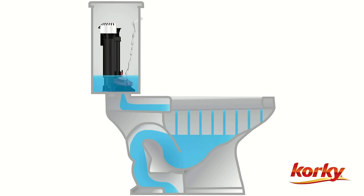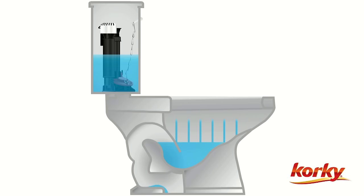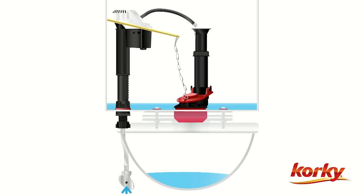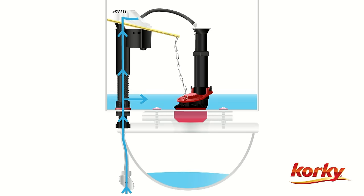Once the tank is empty the flapper closes, forming a seal in the tank until the next time the handle is pushed. The fill valve turns on and brings water from the water supply into the tank. Water will flow through the base of the valve and through the refill tube to the overflow tube.